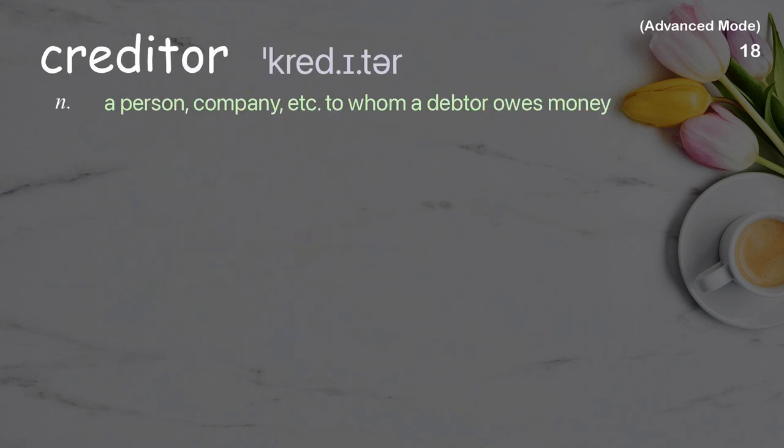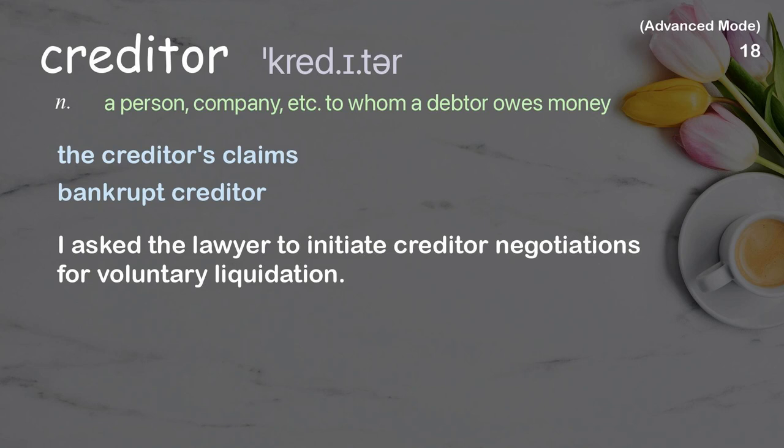Creditor: A person, company, etc., to whom a debtor owes money. Examples: The creditor's claims. Bankrupt creditor. I asked the lawyer to initiate creditor negotiations for voluntary liquidation.